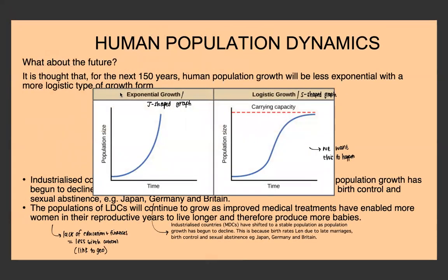It's thought that in the next 150 years or so, human population growth will start to become a more logistic type of growth form rather than exponential. A logistic or S-shaped graph shows growth that starts exponentially but slows as we near carrying capacity, eventually leveling off. This is the ideal situation.